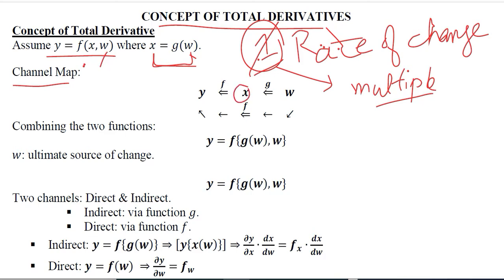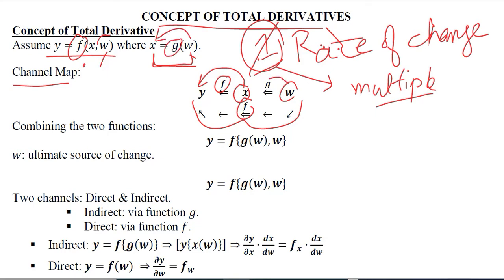Primarily, x is affecting y through function f as we can see here. W is also affecting y through function f as we can see here. But w is affecting x through function g. This is written here — w is affecting x through g. I can write this in a combined way after making this map in which all of the relationships are becoming clear.